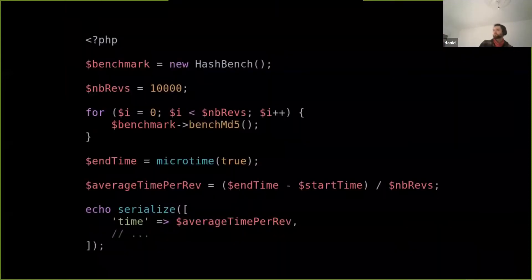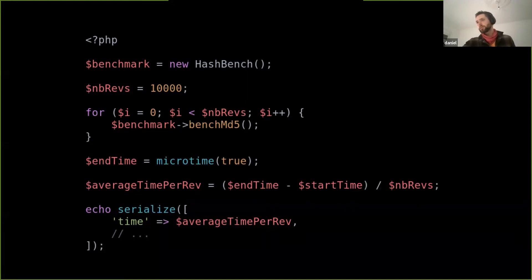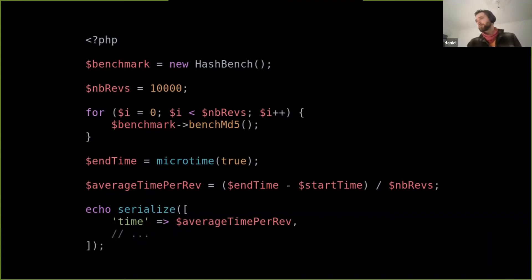This is how it works — a template that's pretty much exactly the same as the first example we saw. It instantiates your benchmarking class and returns a serialized string to PHP Bench, which launched the process. You can implement different templates for this — you can collect anything you like, return a serialized string, and map it to a result object in PHP Bench. Then you can use that information however you want.